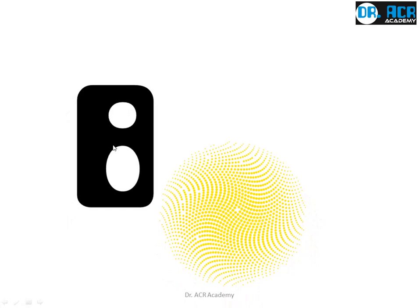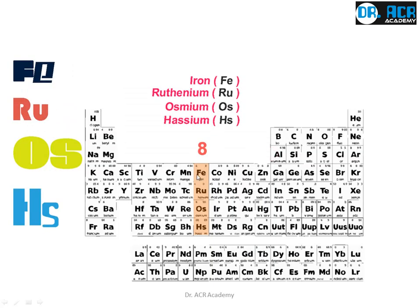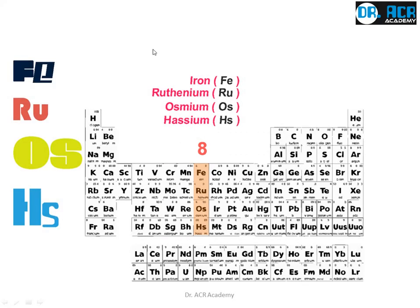Now we come to the eighth group. We know many operating systems like Windows and Mac. But there is a new operating system called Feru OS — it means an operating system for high schools, made by children from a high school for their school computers. Feru OS High School — Feru Operating System High School. This is how it is linked to the periodic table, and these are its real names.